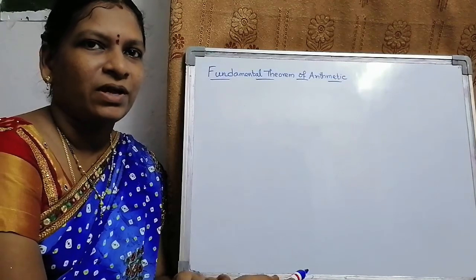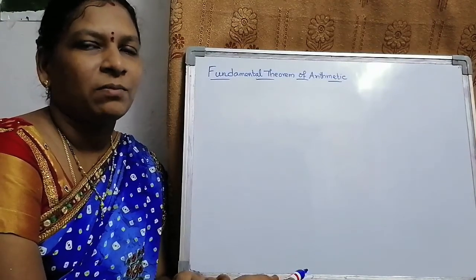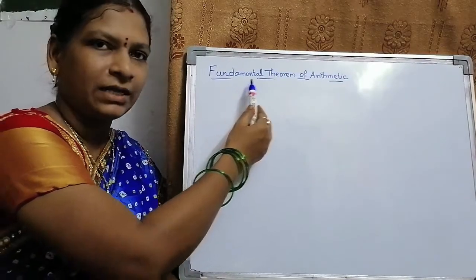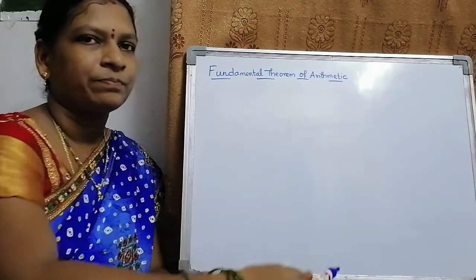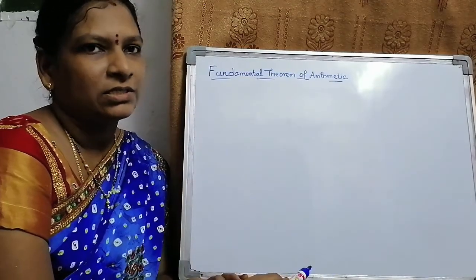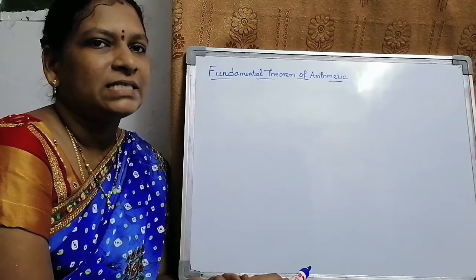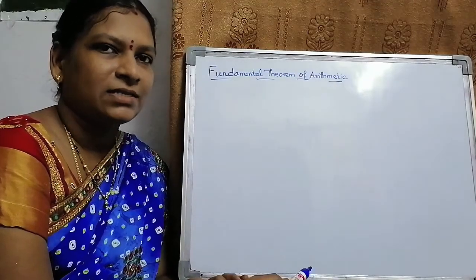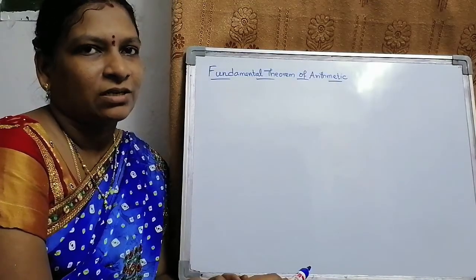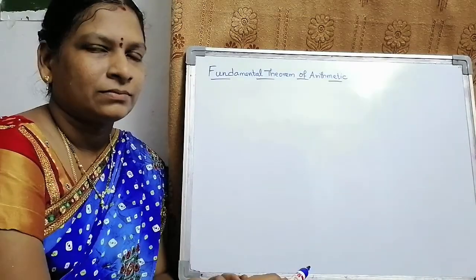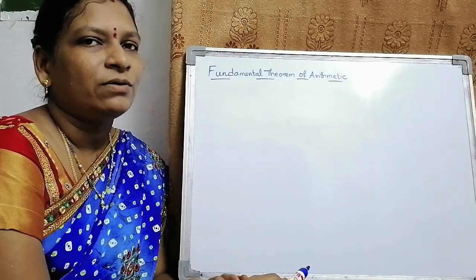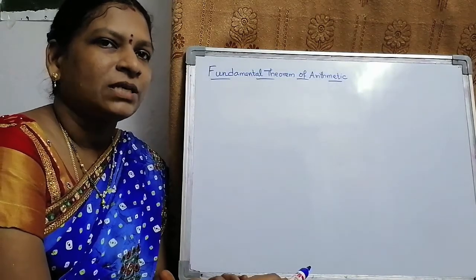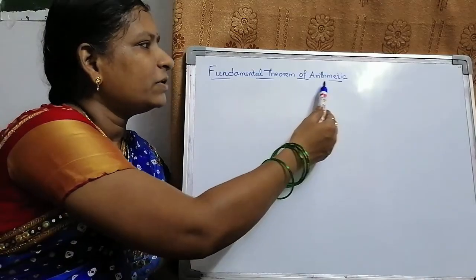Hi friends, in this video I am going to explain you about the Fundamental Theorem of Arithmetic. Before going into this topic, we have to recall the basic part related to this theorem. The basic thing we have to know here is prime factorization of a composite number. Let us see how to find prime factorization of a given number first, and afterwards we will define the Fundamental Theorem of Arithmetic.